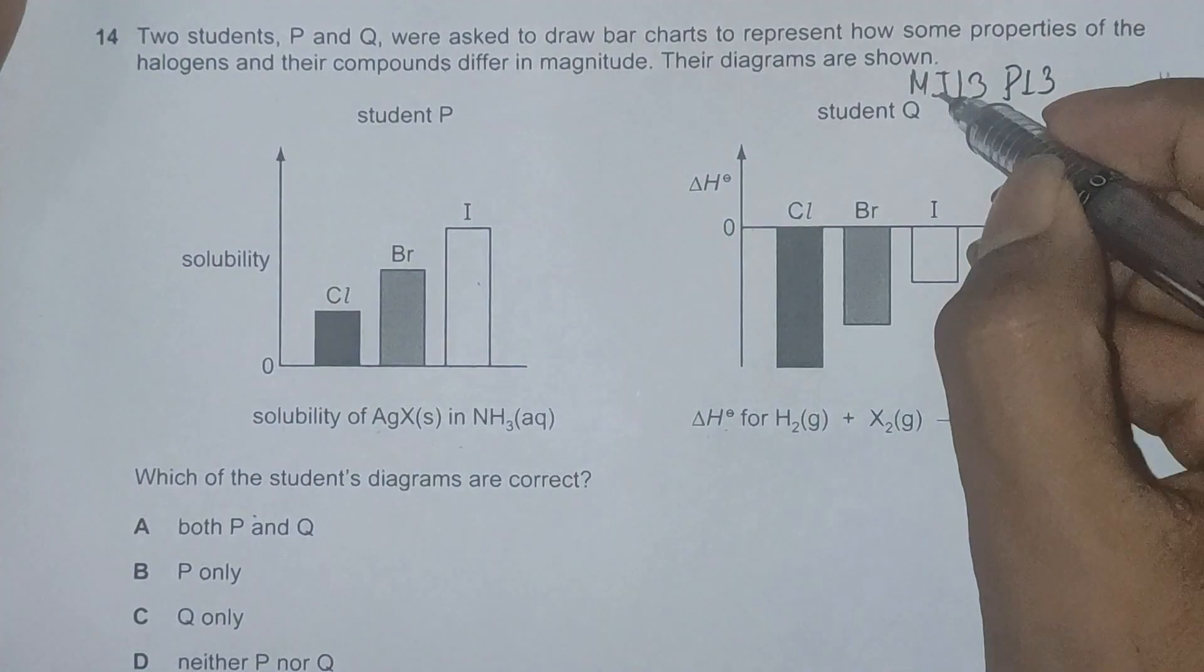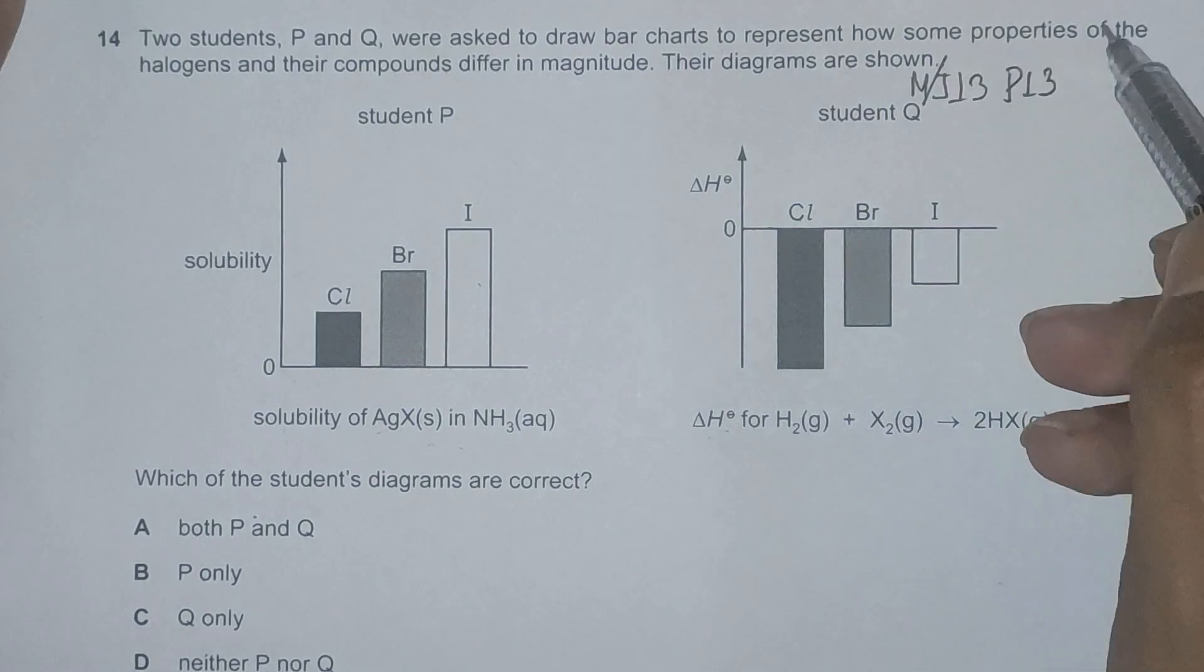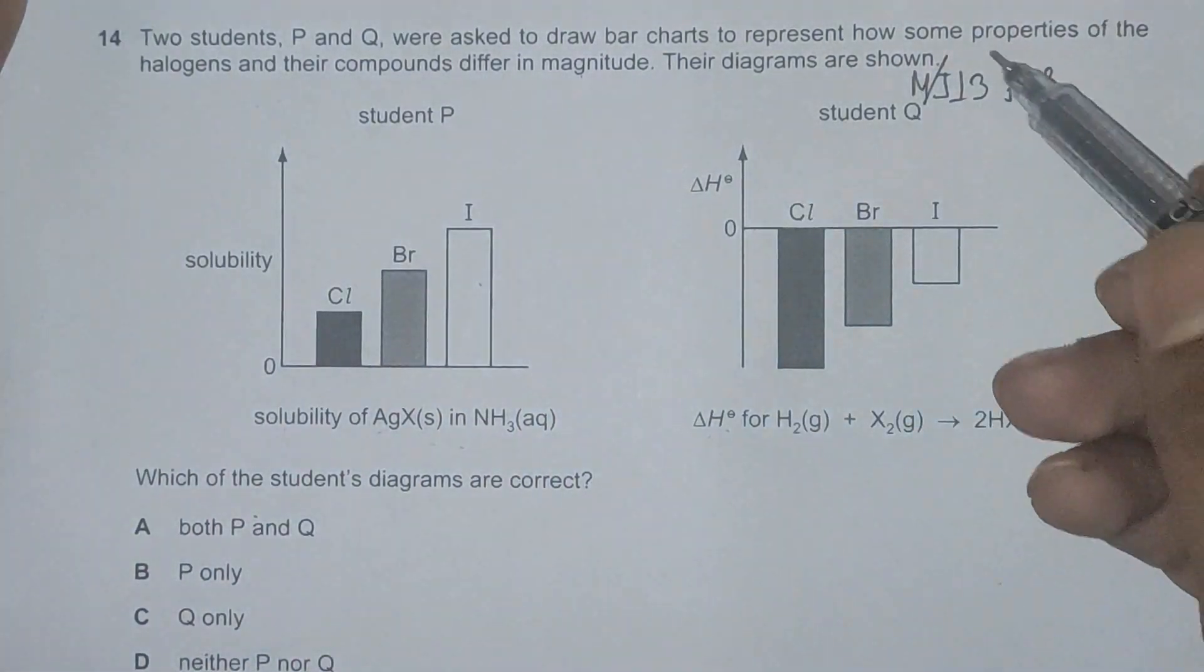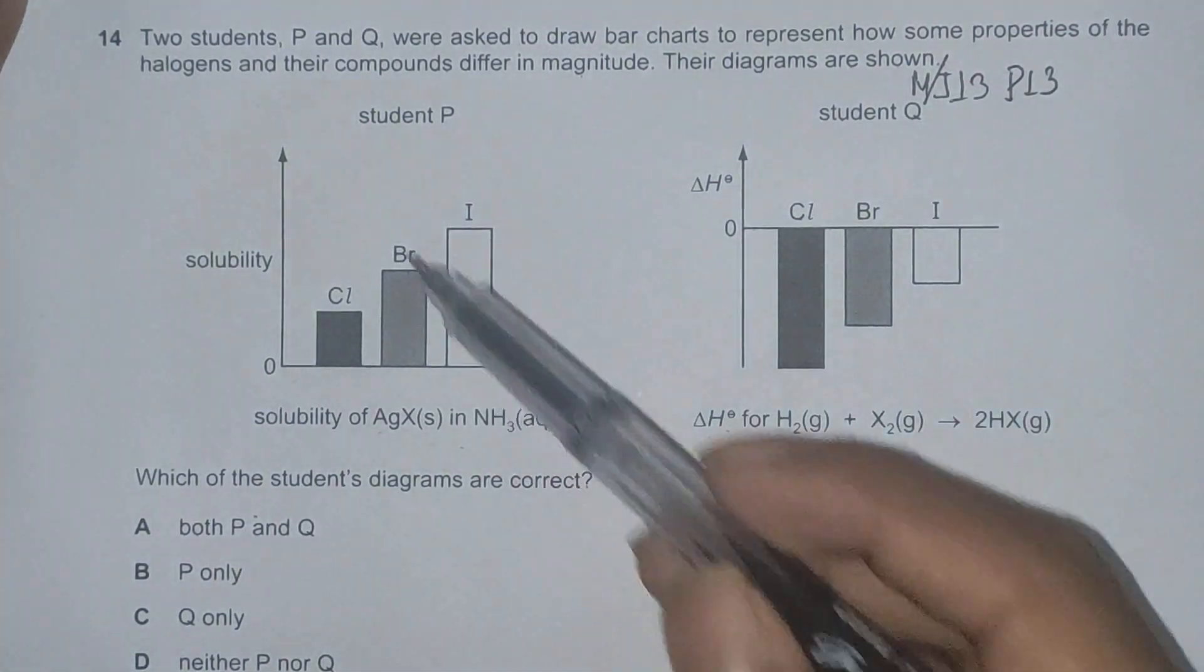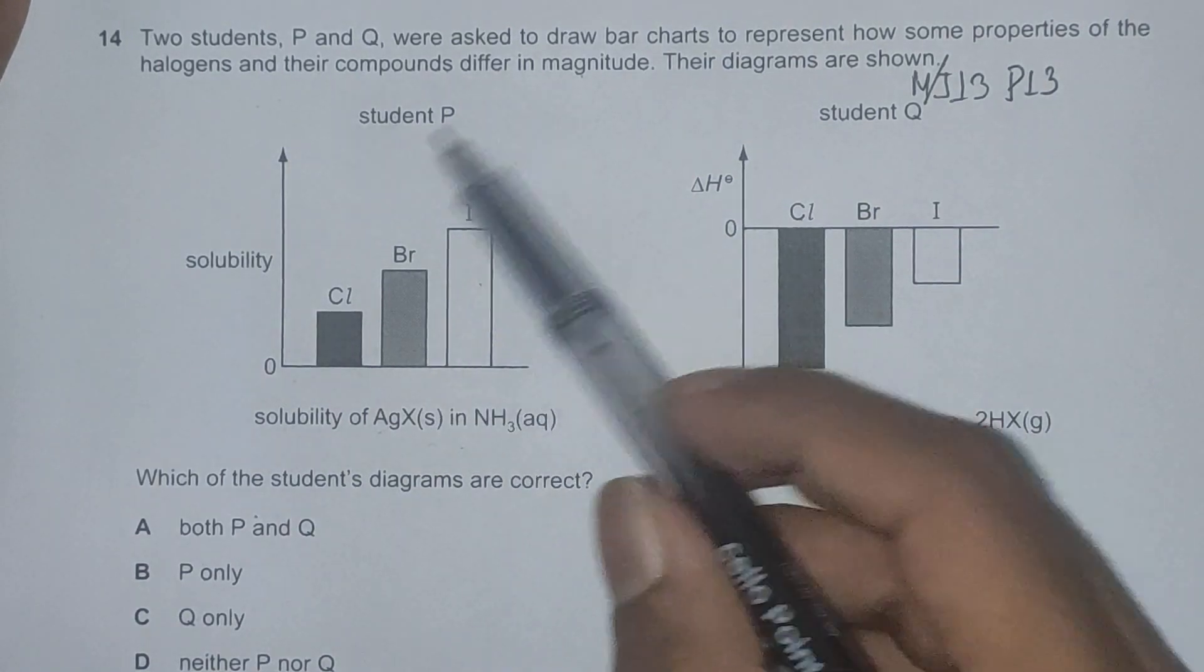The question reads: two students P and Q were asked to draw bar charts to represent how some properties of halogens and their compounds differ in magnitude. The diagrams are shown. We have been given two bar charts drawn by students P and Q on two different properties of halogens.